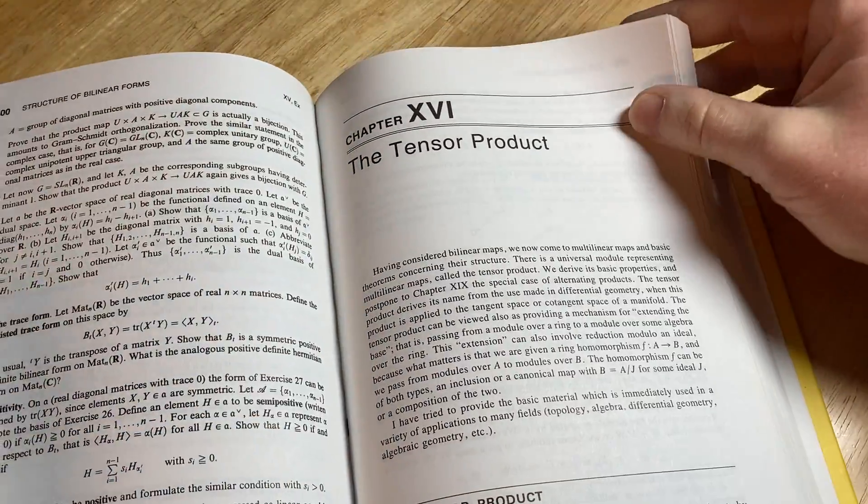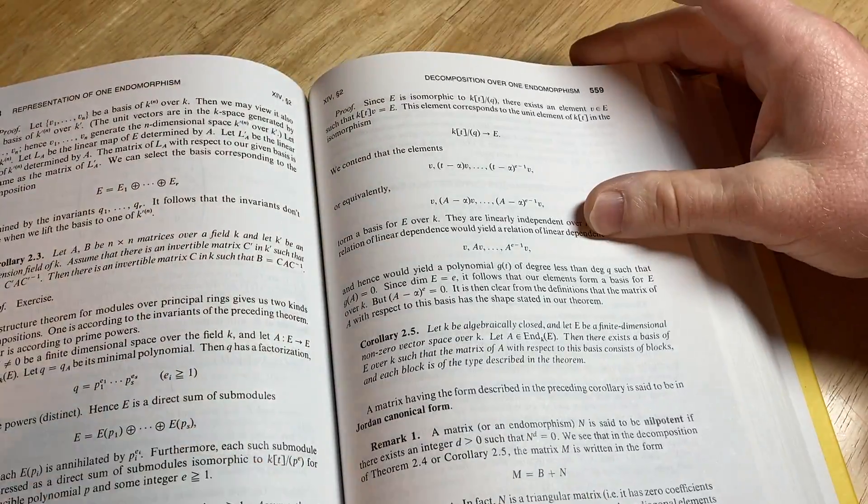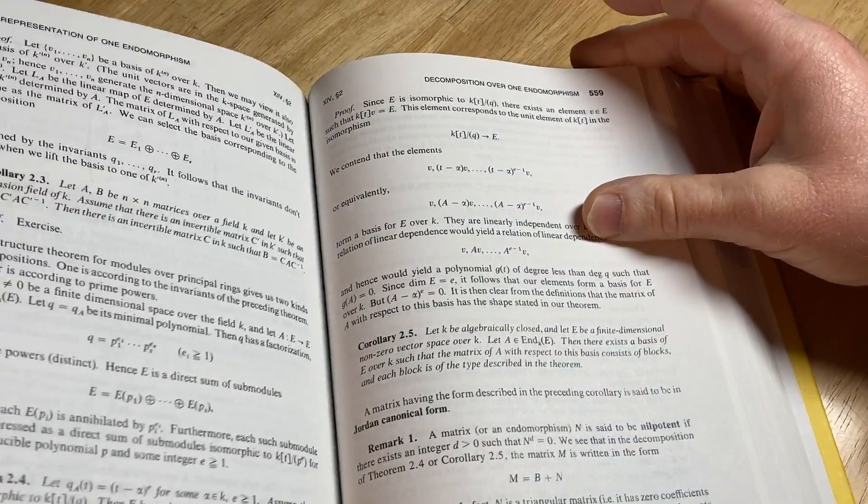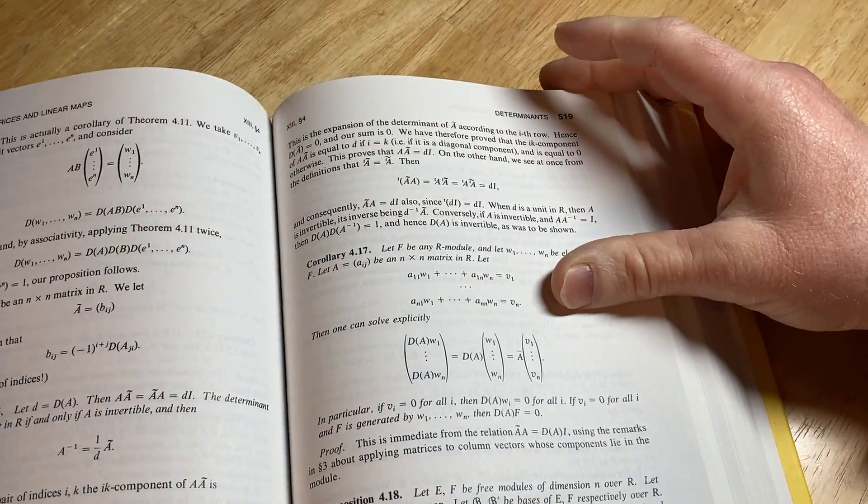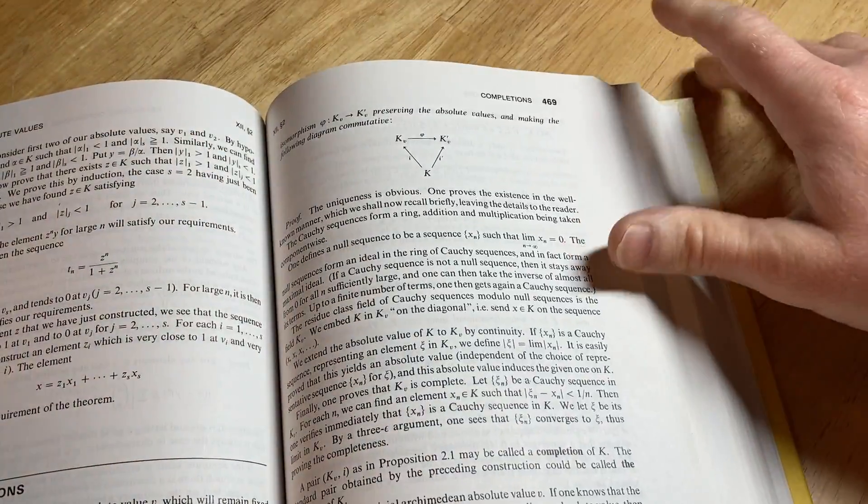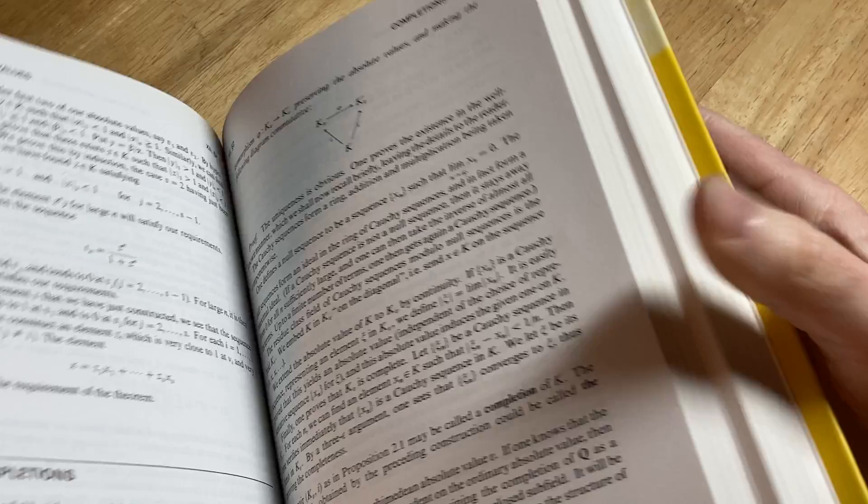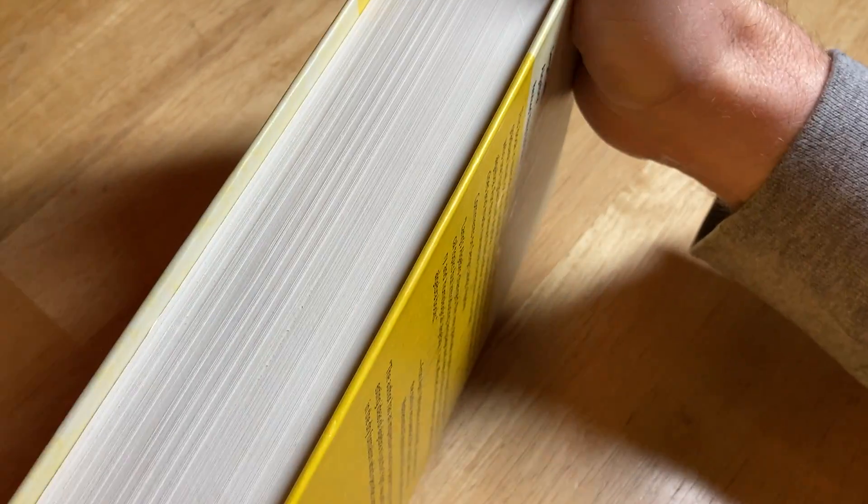The tensor algebra of a module. The tensor product. Decomposition over one endomorphism. Determinants. A lot of mathematics here. So there are other books that are easier than this one for learning, like the book by Dummit and Foote.